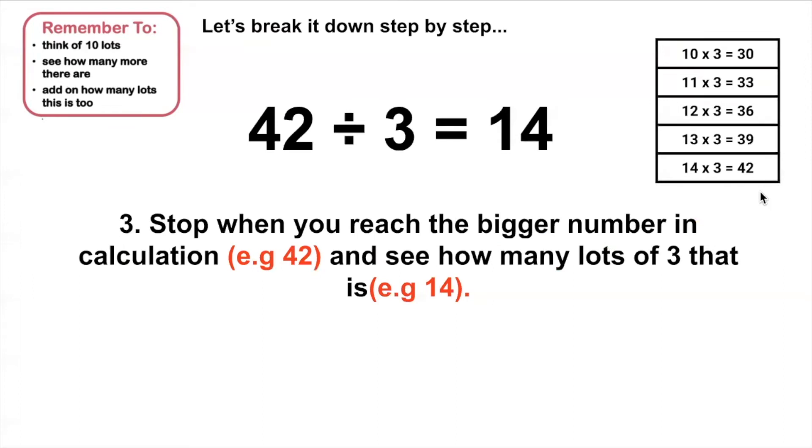I'm going to stop when I get to 42, because that is the bigger number in my calculation. And that will show me how many lots of 3 that is. So in the table it shows me there are 14 lots of 3 that make 42. So my answer is 14.